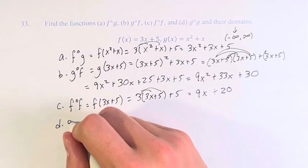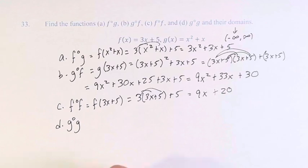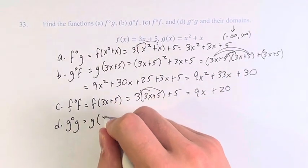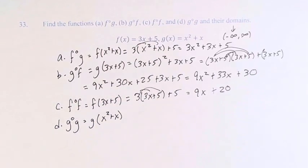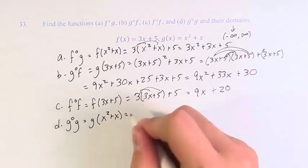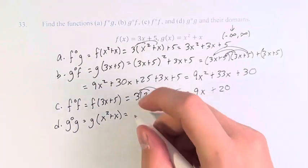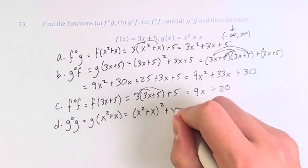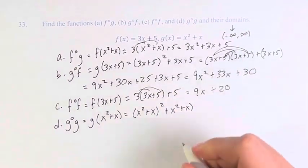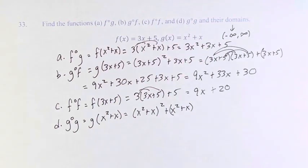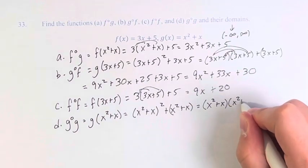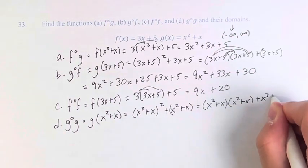And finally, g of g. This is equal to g of x squared plus x. And we can simply plug it in. So we have x squared plus x squared, plus x squared plus x. This is equal to x squared plus x, times x squared plus x, plus x squared plus x.